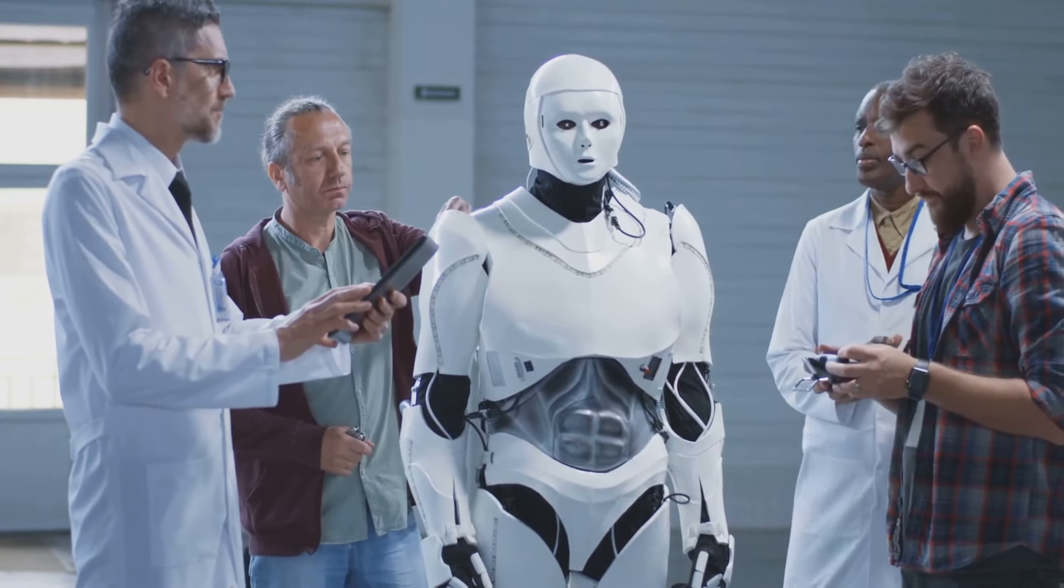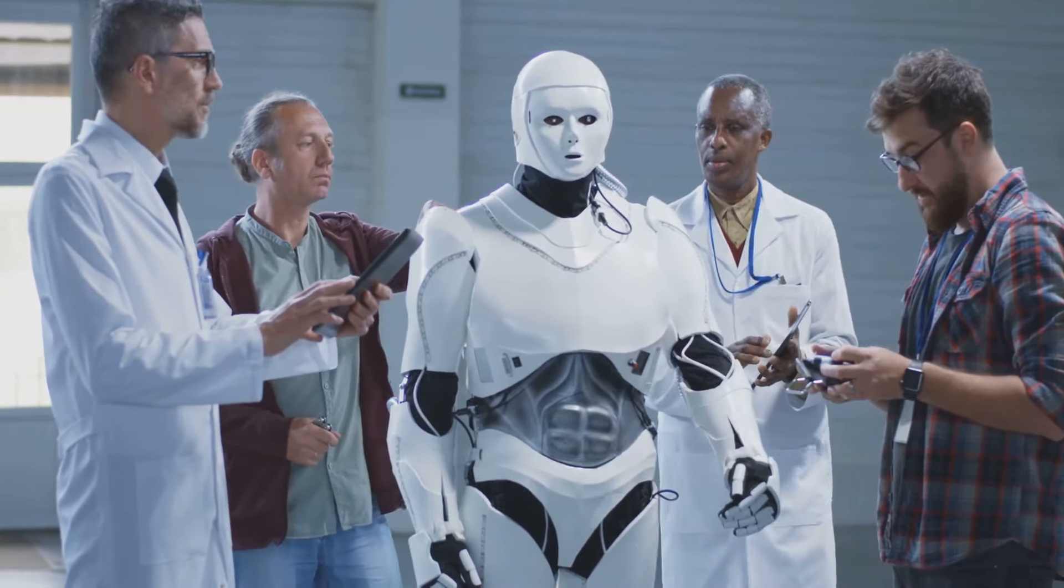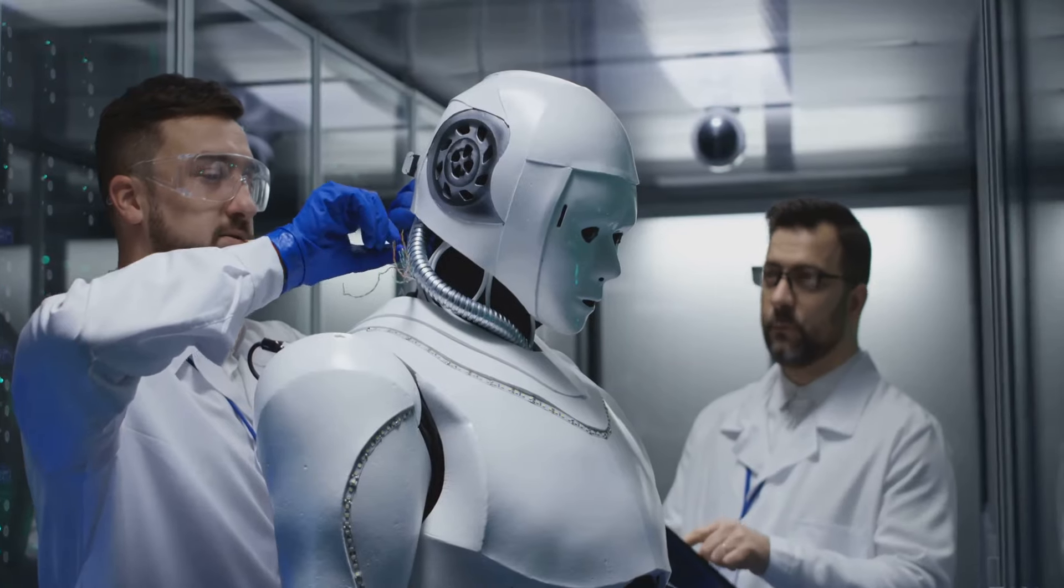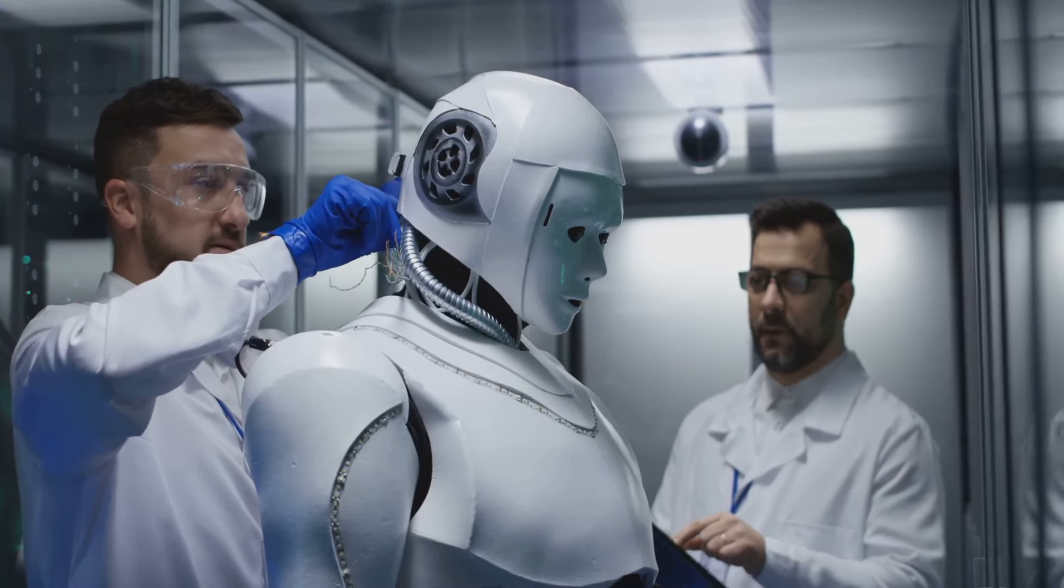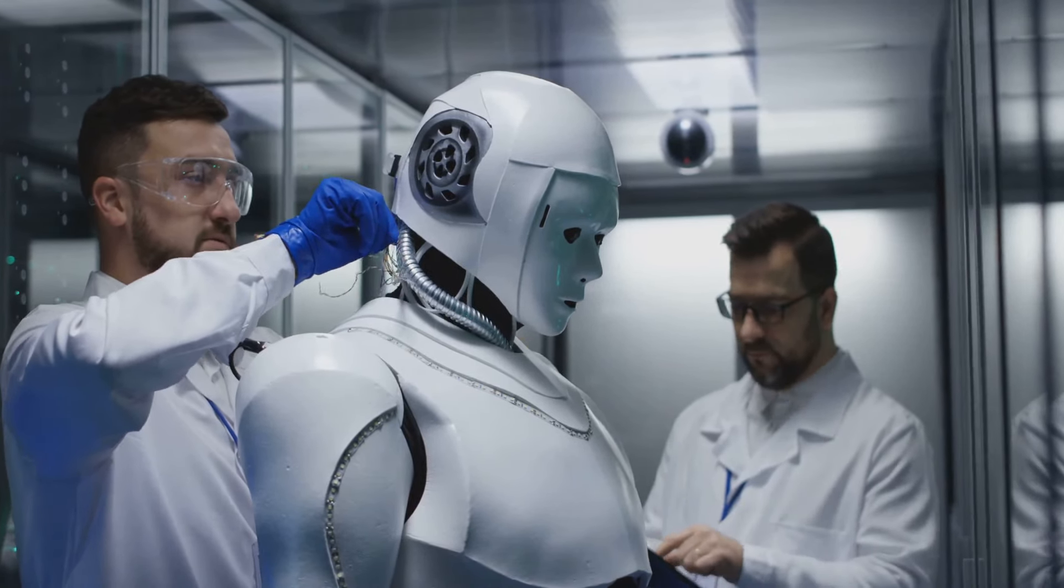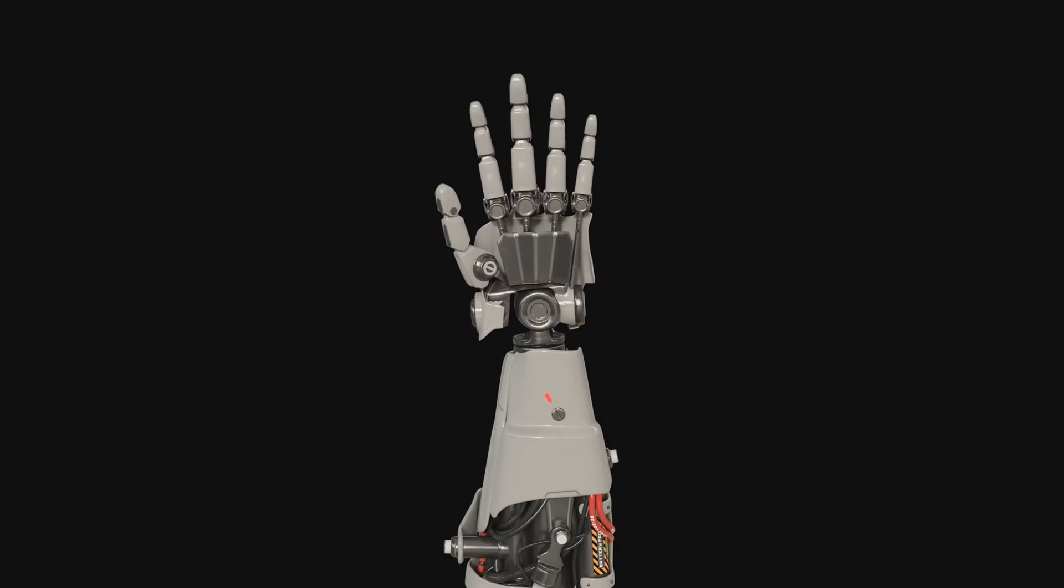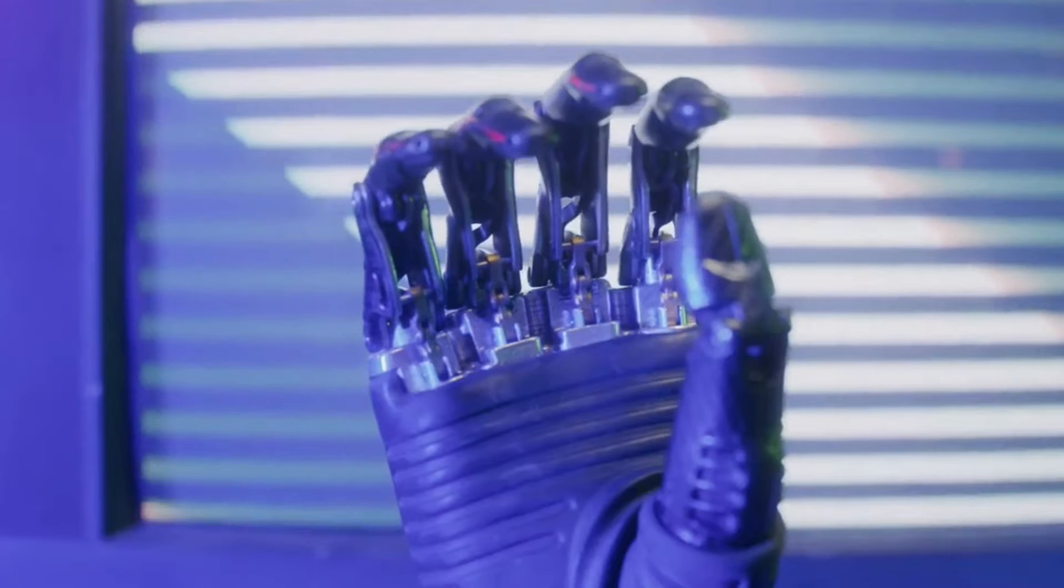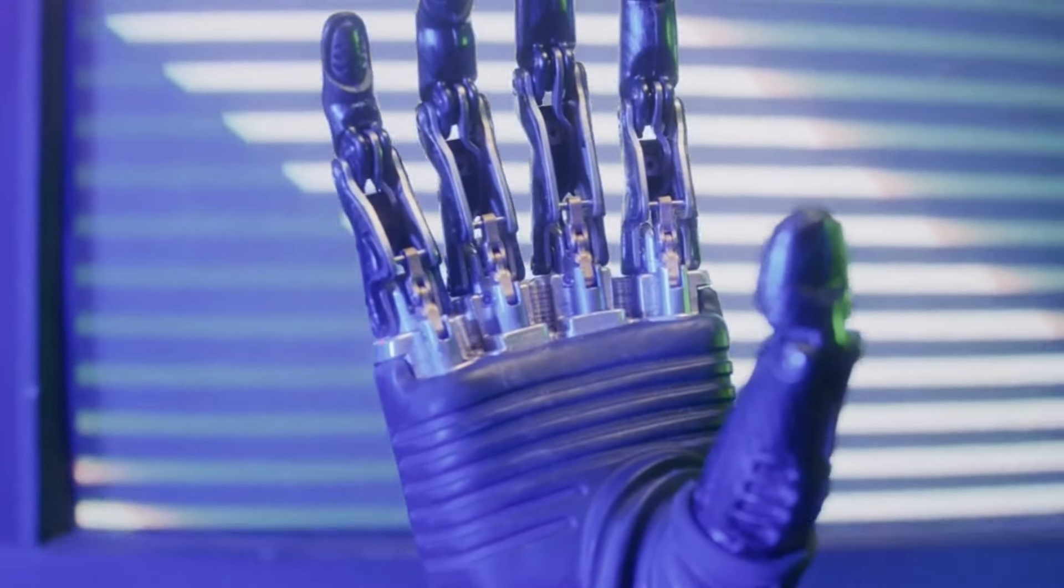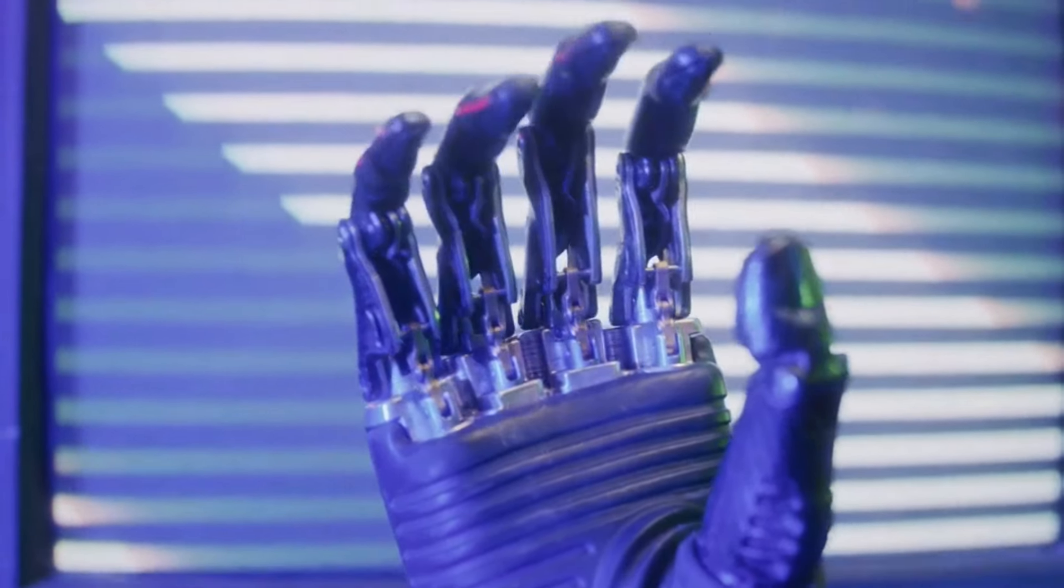The emergence of John, the latest AGI-ready humanoid robot from RobotEra, marks a pivotal moment in this journey. John is not just another iteration in the lineage of humanoid robots. It represents a paradigm shift, pushing the boundaries of what was previously considered possible.